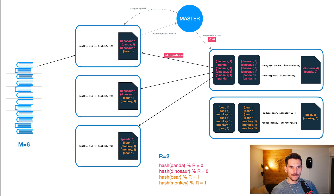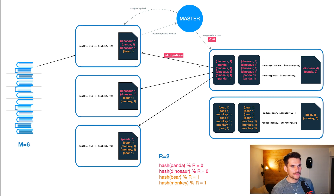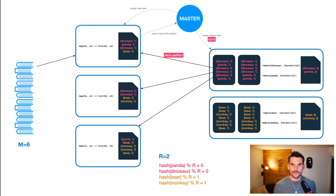Then we can run the reduce function once for key dinosaur and a second time for key panda, basically summing up the ones to find the word count. Similarly, the second reducer gets assigned reduce key one, fetches the yellow file regions from the map workers, sorts the input, and applies the reduce function for each distinct key in its input dataset. So here we also create two records: the beer count equals four and the monkey count equals three.